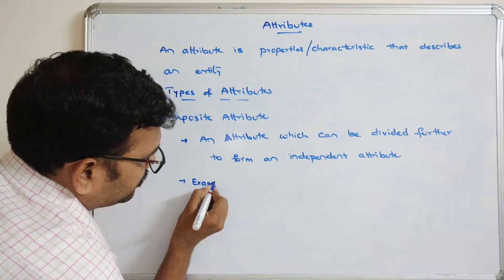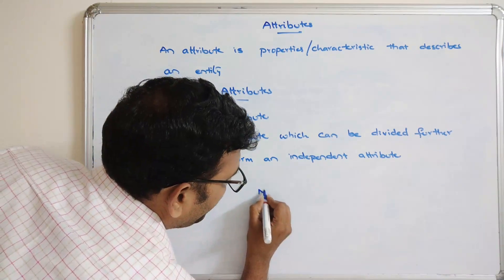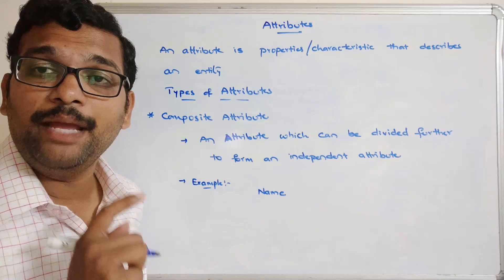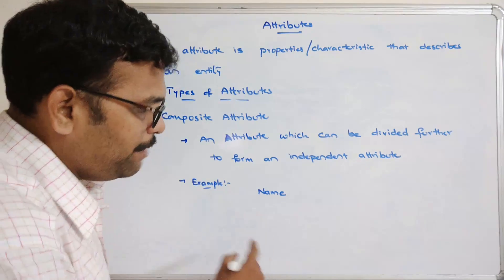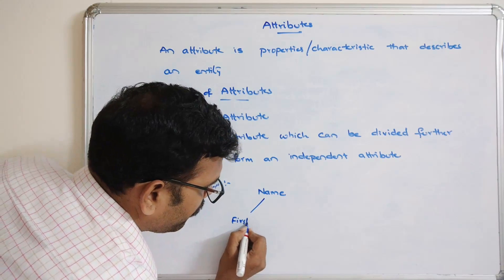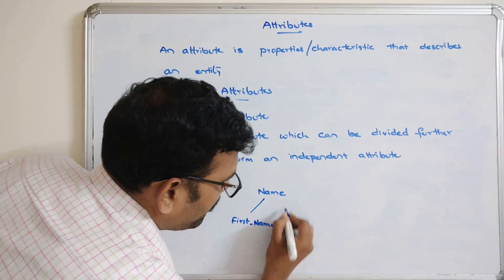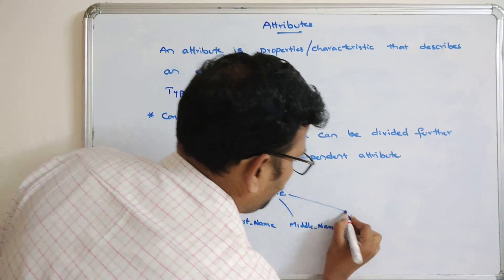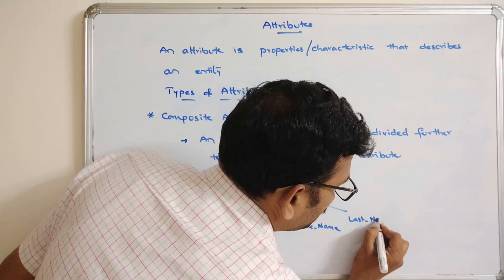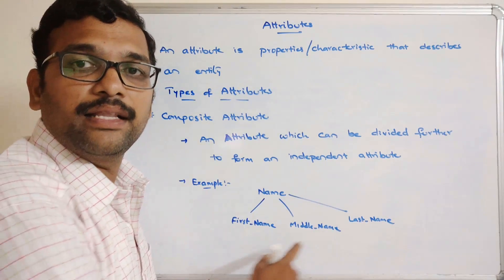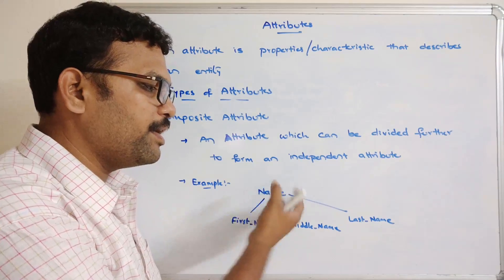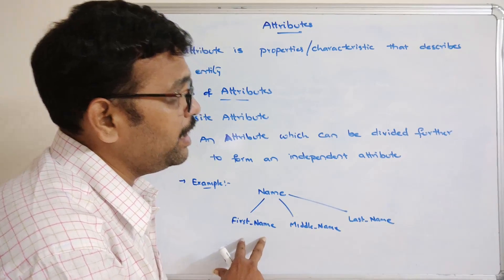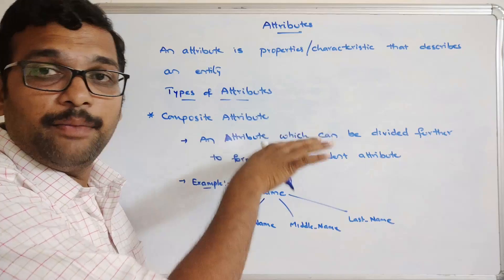For example, consider 'Name' as an attribute of the student entity. Name can be further divided into First Name, Middle Name, and Last Name. These are individual attributes on their own. So name can be divided into subparts, and therefore we call it a composite attribute.